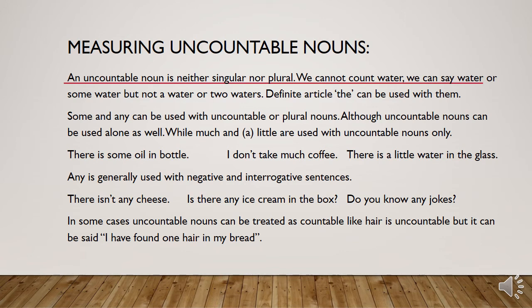When we have a very small amount of something uncountable — maybe a liquid or something else — we say 'a little water in the glass'. That represents the least quantity. A little bit more, and we say 'some oil' or 'some water in the glass'. For an even greater quantity of something uncountable, we use 'much' — for example, 'I don't take much coffee'. So we have different quantifiers to express amounts of uncountable nouns.